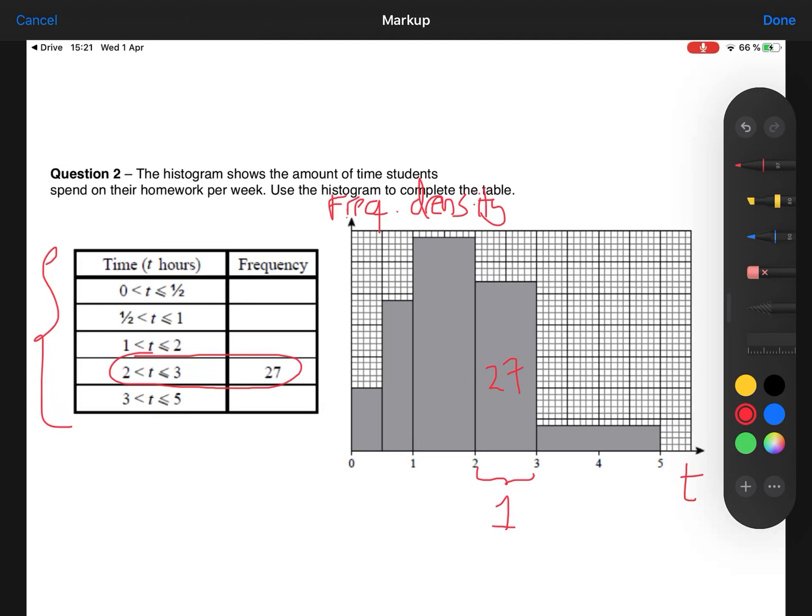So if the width is one and the frequency is 27, remember that frequency density is equal to the frequency divided by the width.